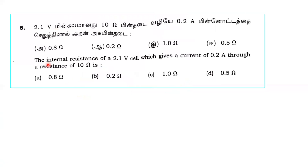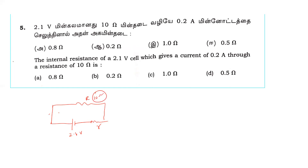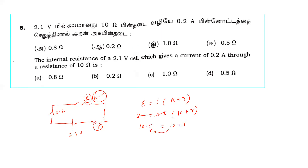Next question: the internal resistance of a 2.1 V battery that gives a current of 0.2 ampere through a resistance of 10 ohm. Using EMF equals current times (R external plus r internal): 2.1 = 0.2 times (10 + r). Solving gives 10.5 = 10 + r, so internal resistance r equals 0.5 ohm. The correct answer is 0.5 ohm.